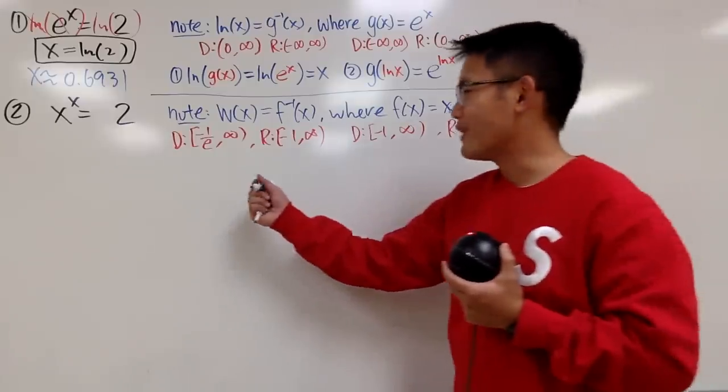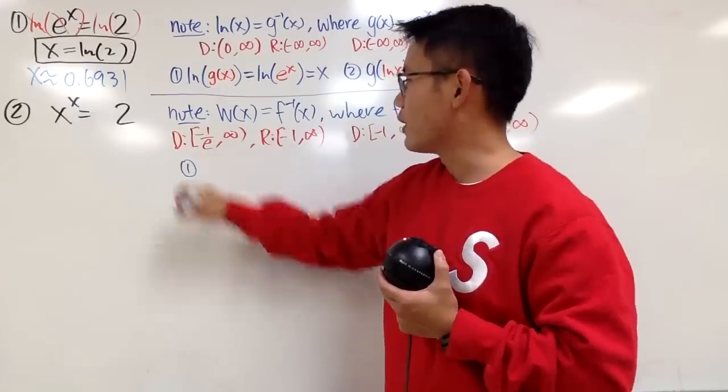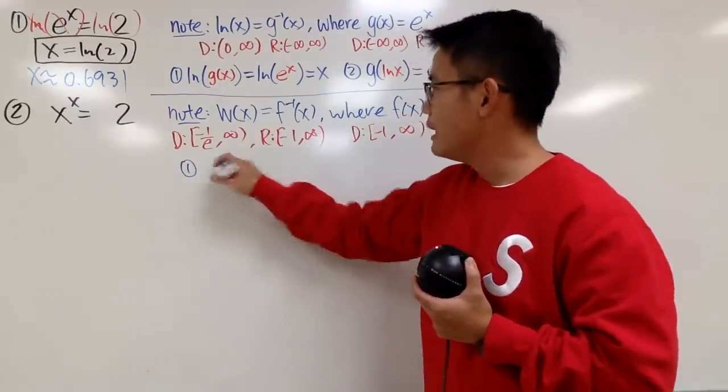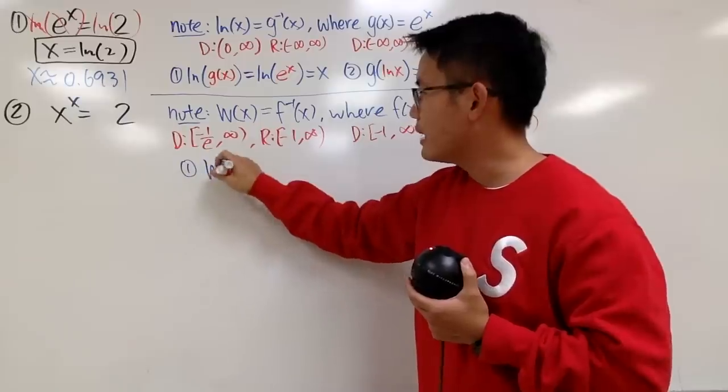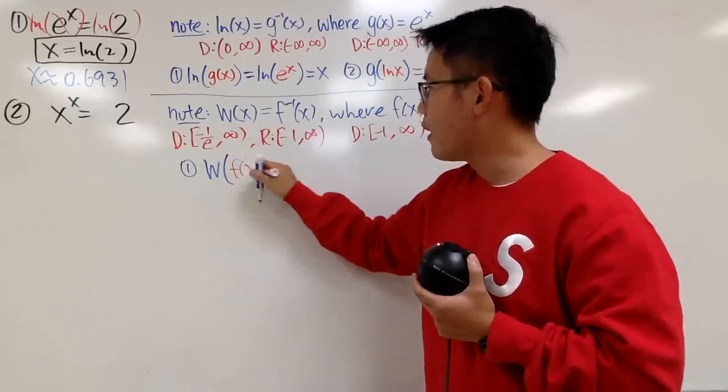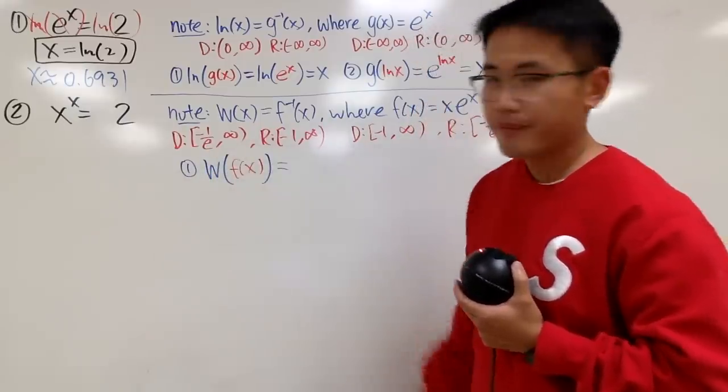Well, well, let's see. We also have two important properties. So, the first one is, of course, let me just put f into w, so it looks like w of f of x, like this.